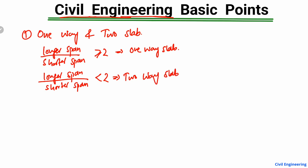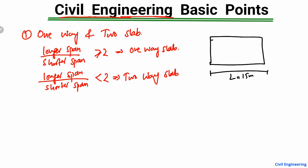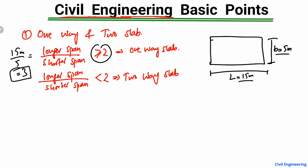For example, if I draw any dimension of the slab — the length L is 15 meters and the width is 5 meters. When I divide the longer span by the shorter span, 15 divided by 5 gives us 3. Since the ratio of 3 is greater than 2, this slab is categorized as a one-way slab.